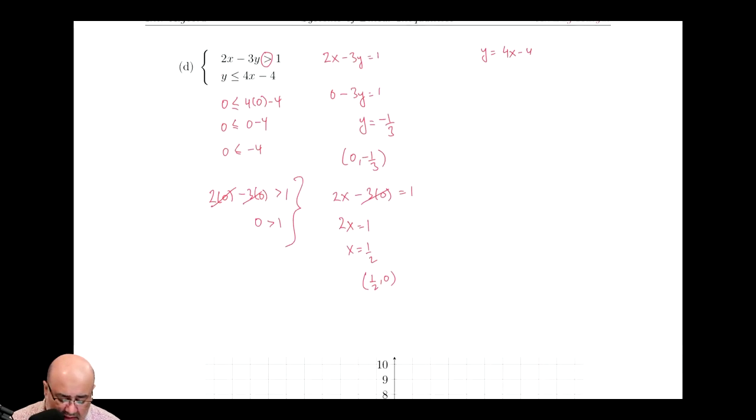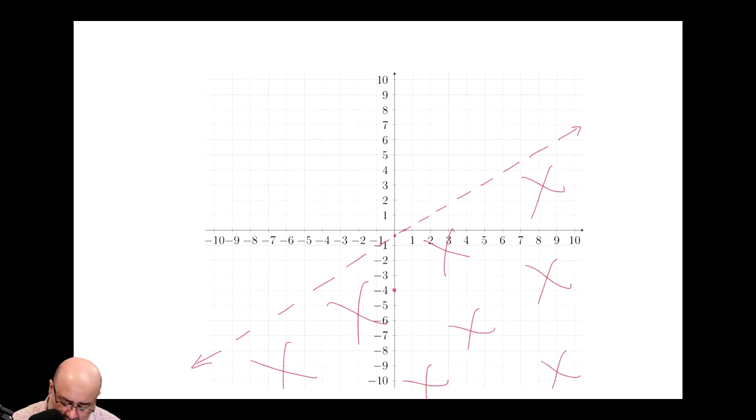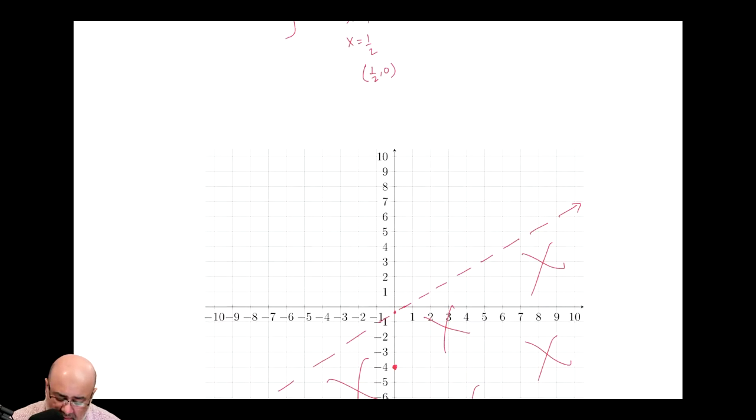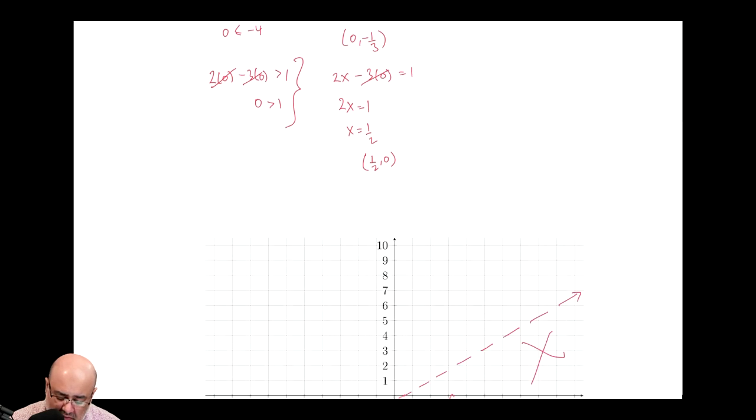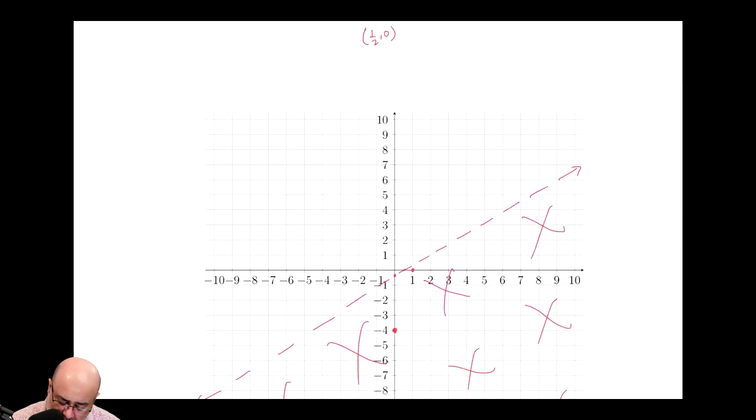And then for the other line, this is nearly in, or actually it is in slope intercept form, so I can just graph it as it is. So I start at negative 4, which is down here. I go up 4 and right 1, because the slope is 4.